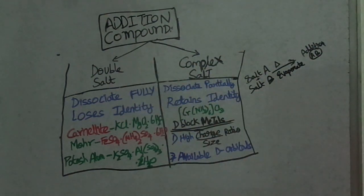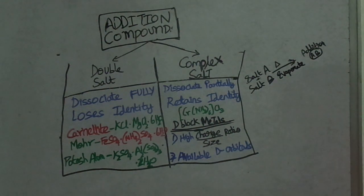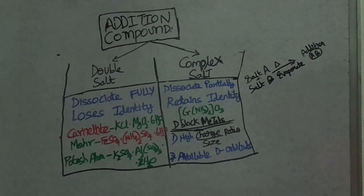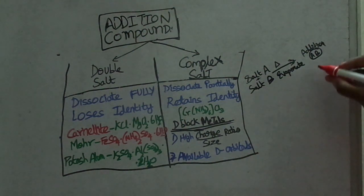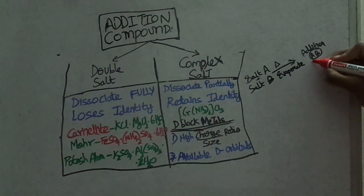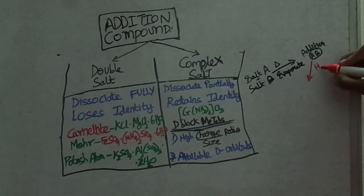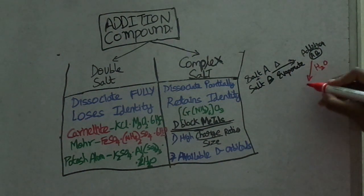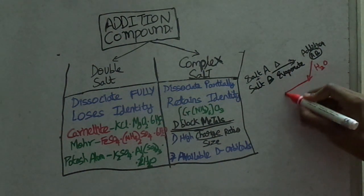How do you see the difference between double salt and complex salt? There is a technique. Why does it help? The addition predictors are very simple.